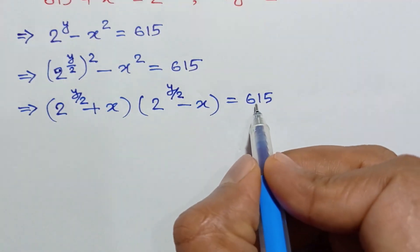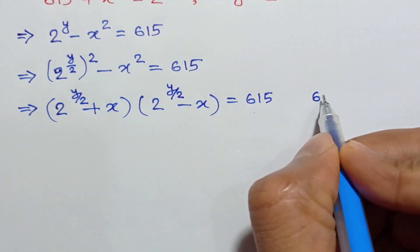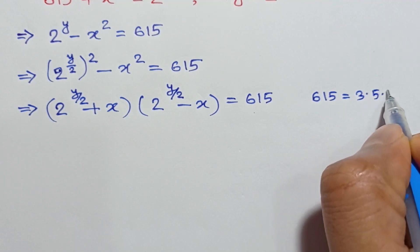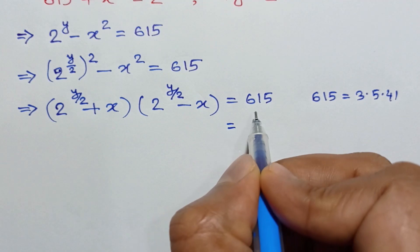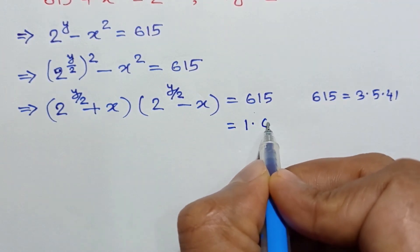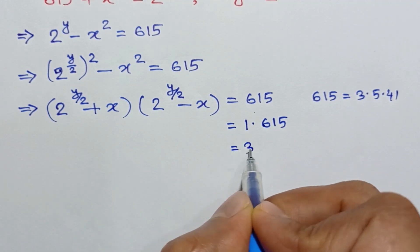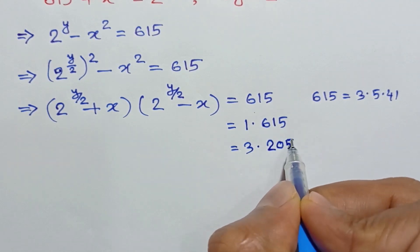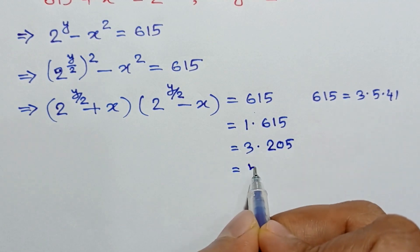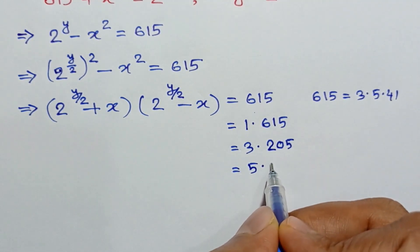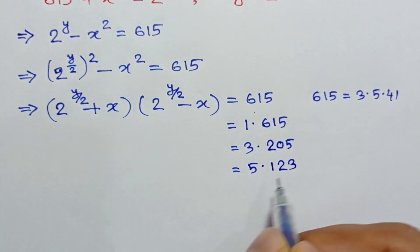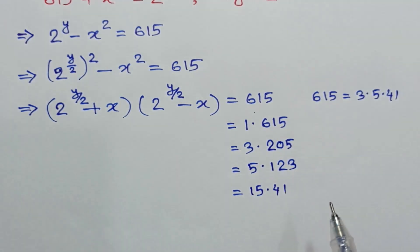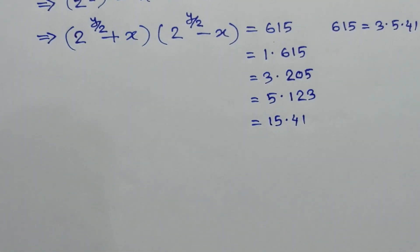Now the prime factorization of 615 is 3 times 5 times 41. So 615 can be written as factor pairs: 1 times 615, 3 times 205, 5 times 123, and 15 times 41.